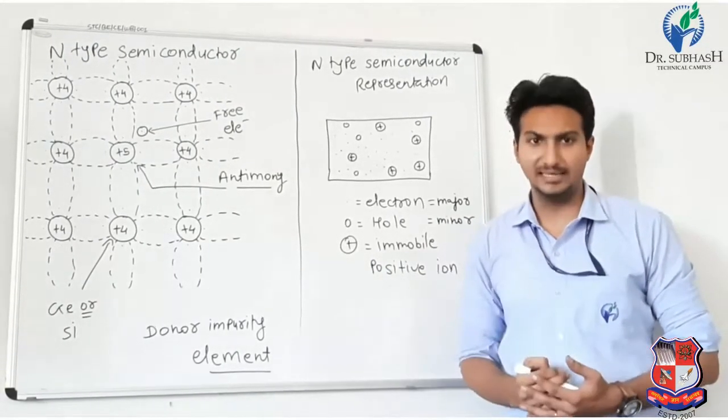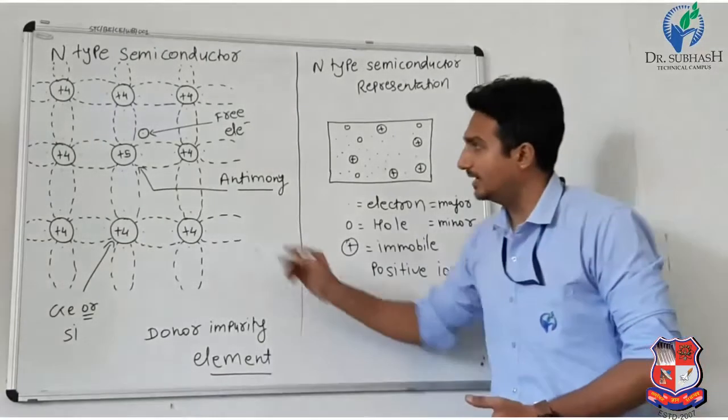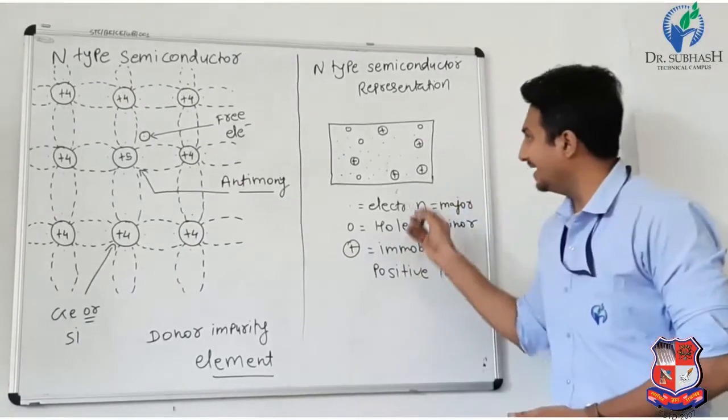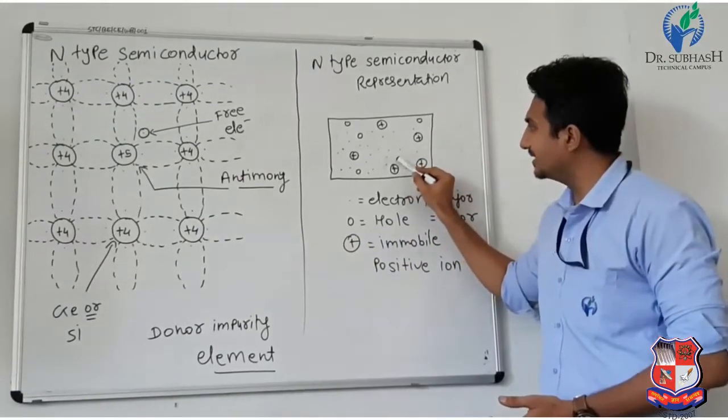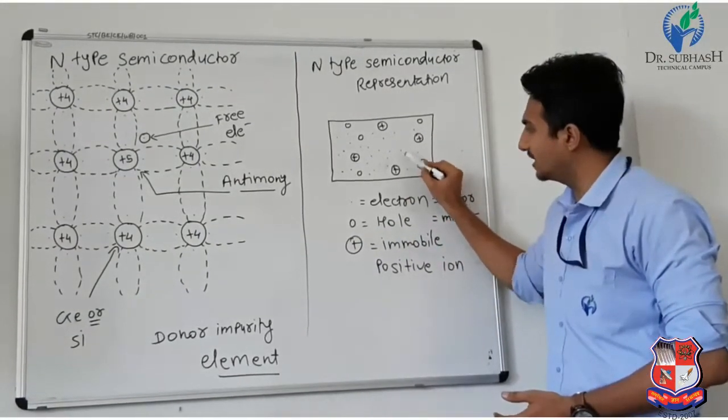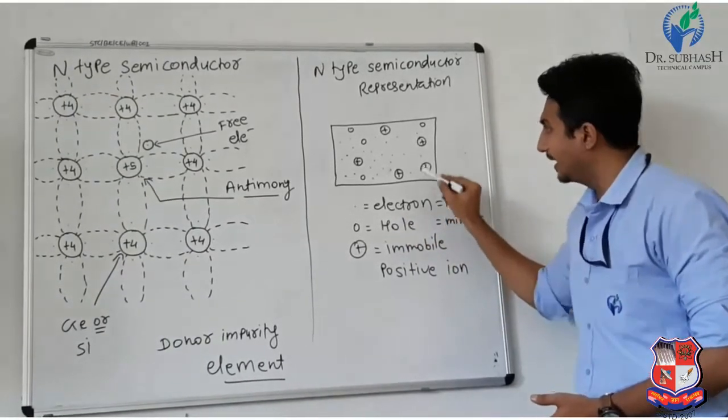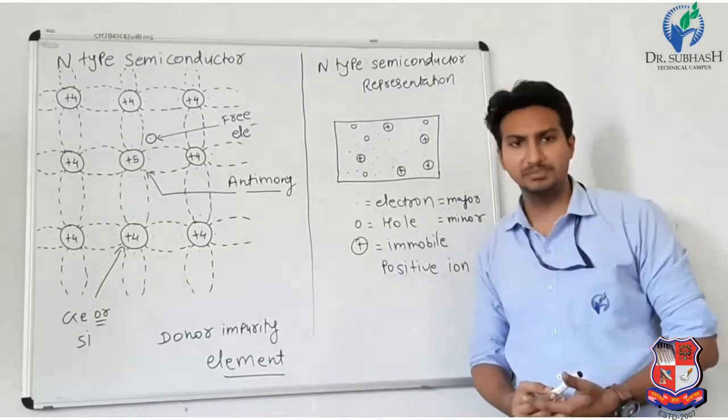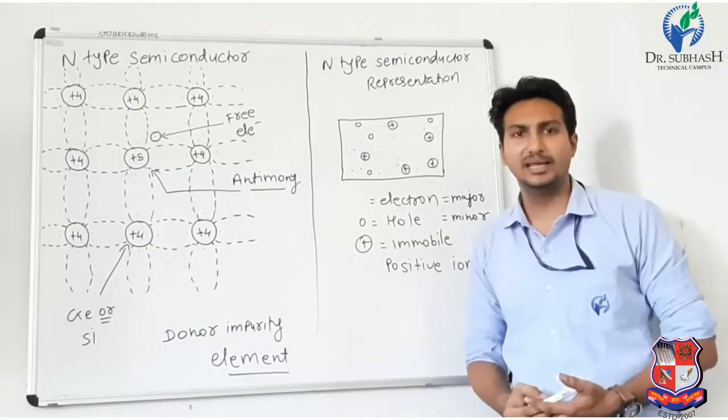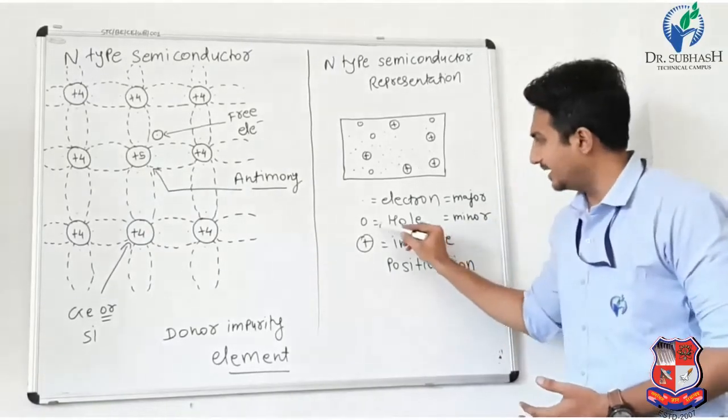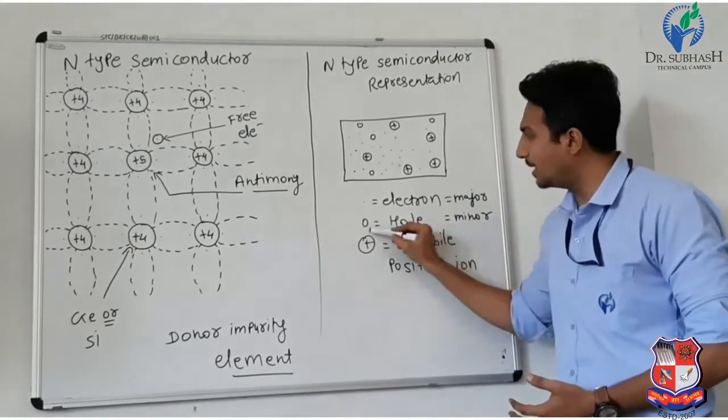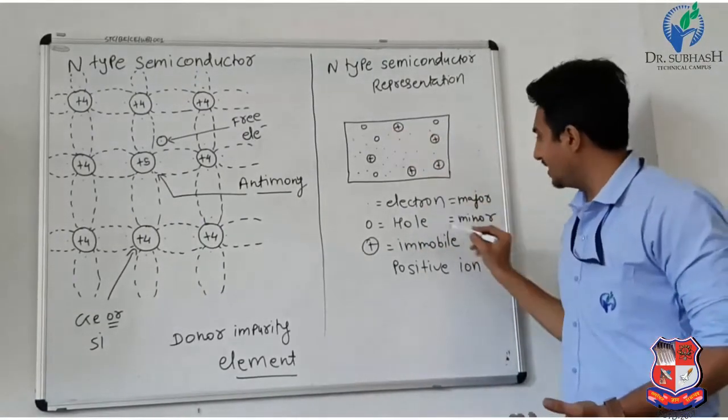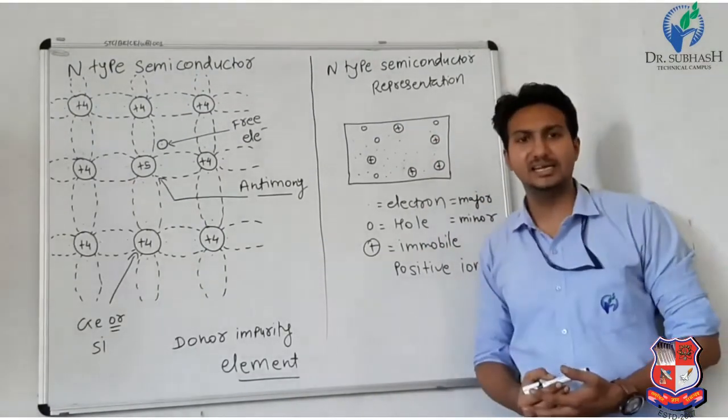This is the representation of N-type semiconductor showing electrons, holes, and ions. The electrons are the majority charge carrier. The holes are the minority charge carrier, which are very low in concentration.